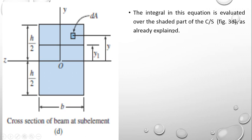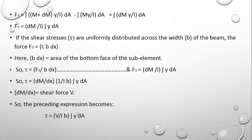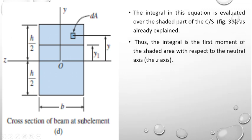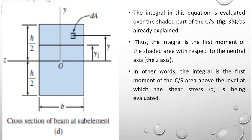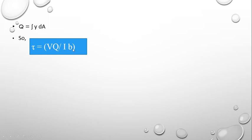The integral ∫y dA is evaluated over the shaded part of the cross-section above level y1. This integral is the first moment of the shaded area with respect to the neutral axis (the z-axis), usually denoted by the symbol Q. Therefore Q = ∫y dA, and the shear stress formula becomes tau = VQ/(Ib). This equation is known as the shear formula, and it can be used to determine the shear stress tau at any point in the cross-section of a rectangular beam.